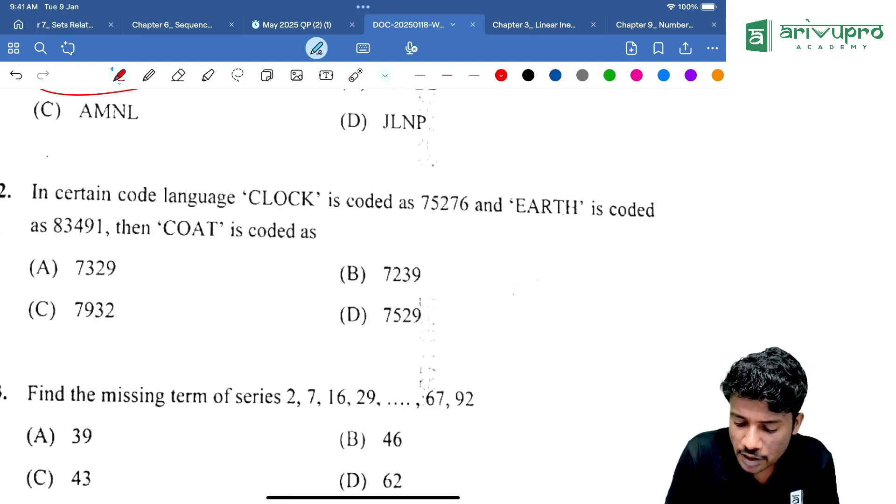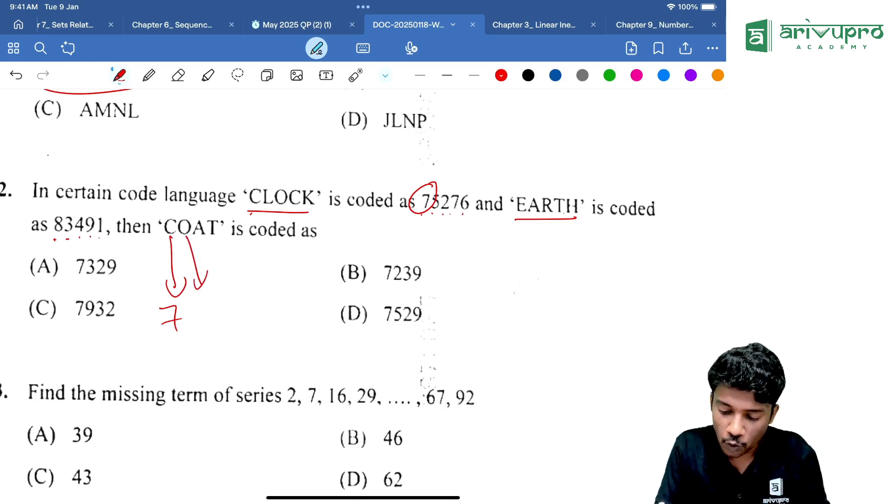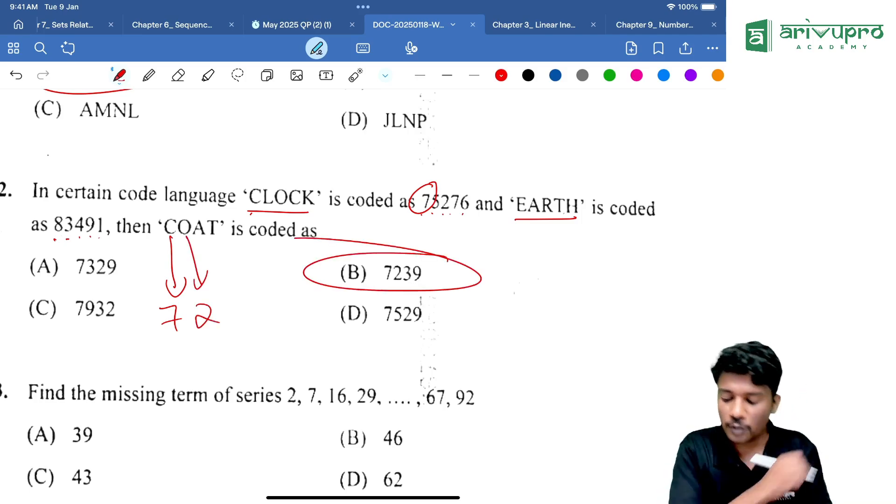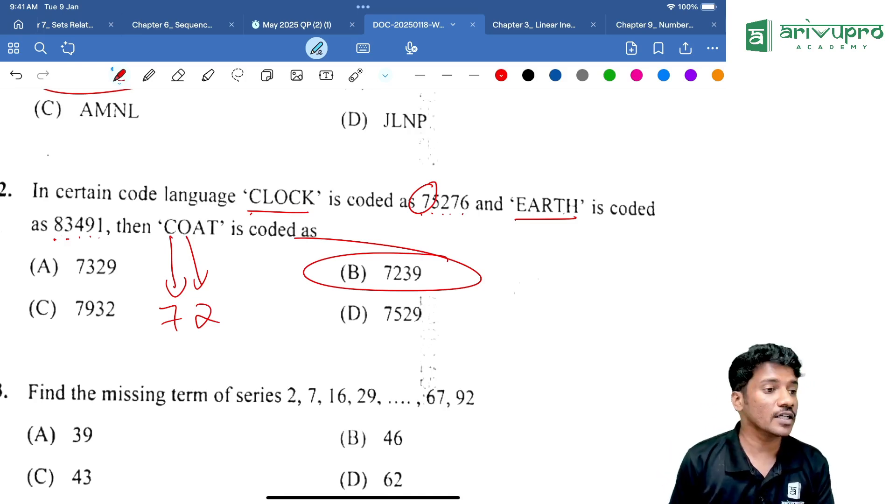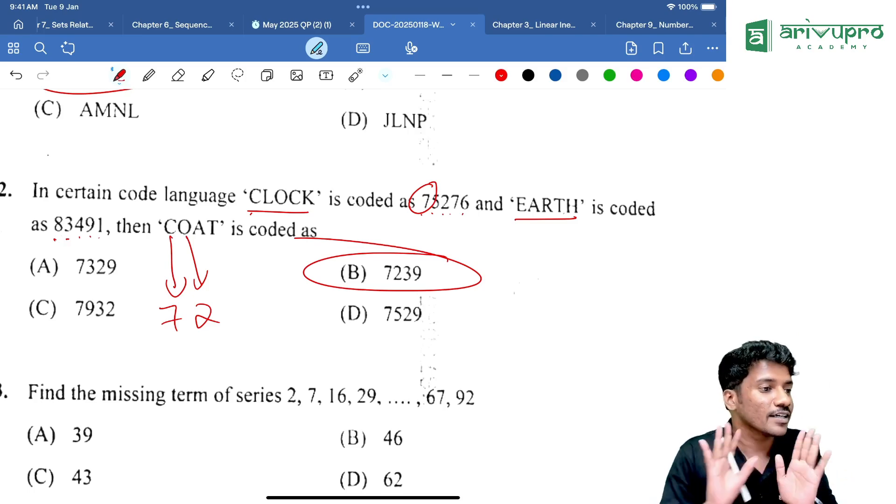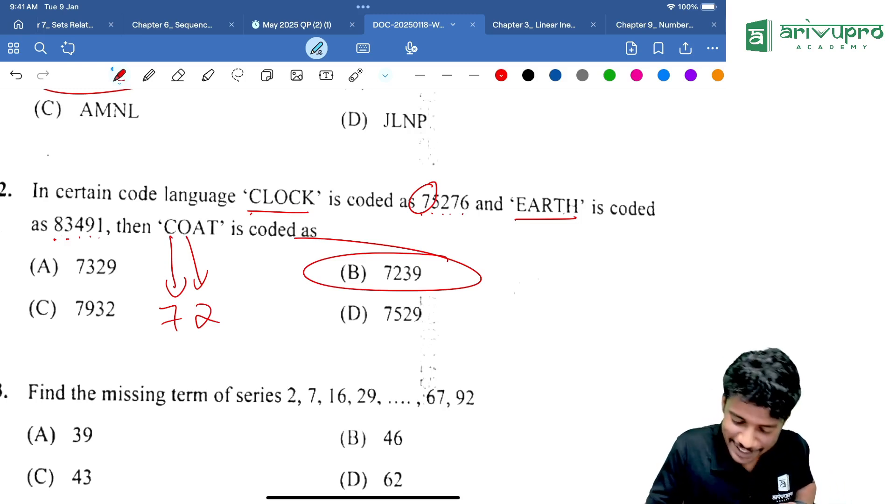In a certain code language, CLOCK is coded as 75276. EARTH is coded as 83491. Then they are asking for COAT. C is 7, then everything starts with 7. Then O is 2. That means 7, 2. Which option is giving us that? Option B, 7, 2, 3, 9. Directly you can go for the answer rather than solving each and everything.